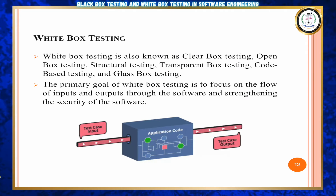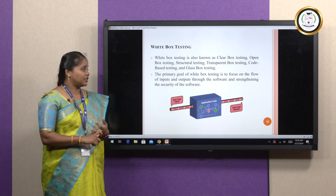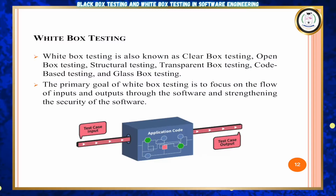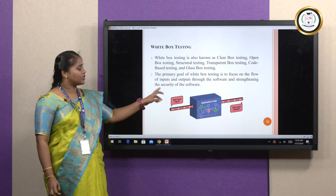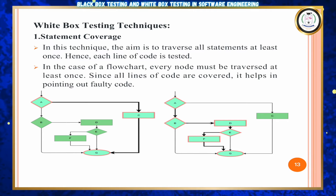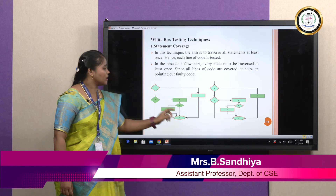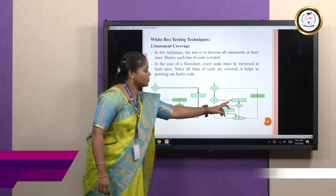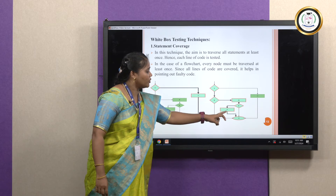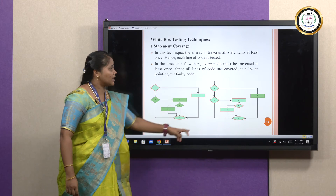Next, white box testing — it is opposite to black box testing. White box testing is also called clear box testing, open box testing, glass testing, structural testing, and transparent testing. It is focused on input-output flows and also on the structural security of the software. There are six types of techniques. First, statement coverage: the aim is to traverse all statements at least once. For example, in a flowchart, A travels to C then to G, or A travels to B, D, E, and then to G — all statements are covered at least once.